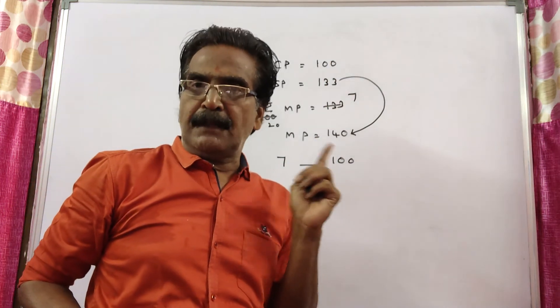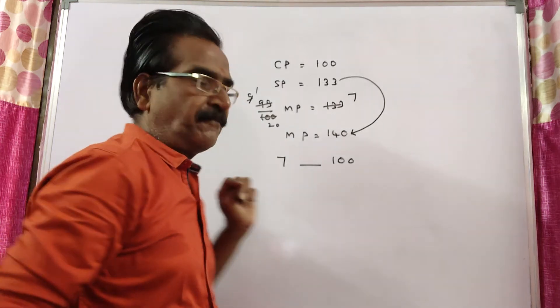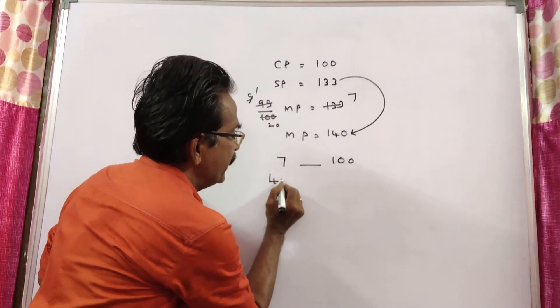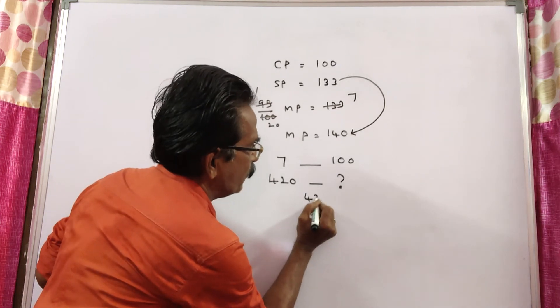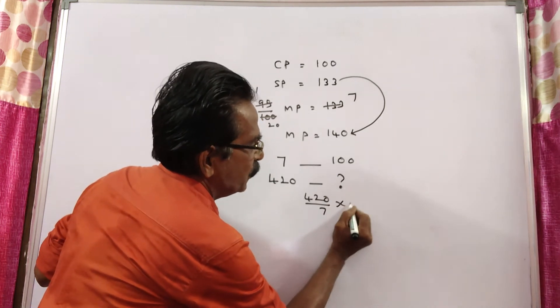it is said that he gets an additional profit of 420. If he gets an additional profit of 420, the cost price will be 420 by 7 into 100.